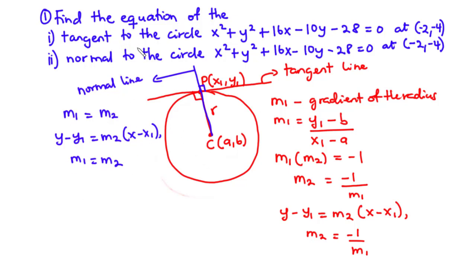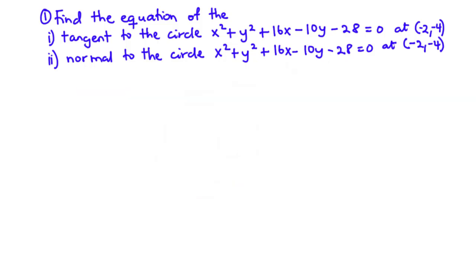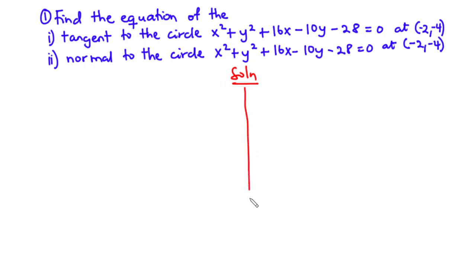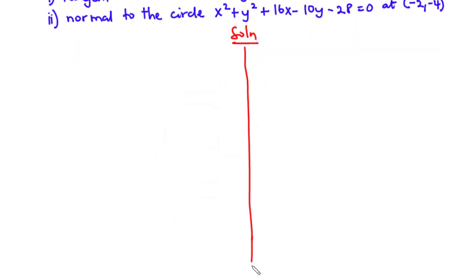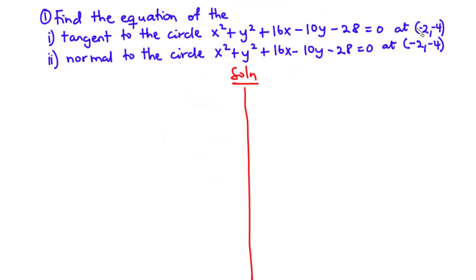Using these two approaches, we are going to find the equation of the tangent and normal to the circle x² + y² + 16x − 10y − 28 = 0 at the point (−2, −4). Let's solve these two questions. The point (−2, −4) is the point on the circumference of the circle.